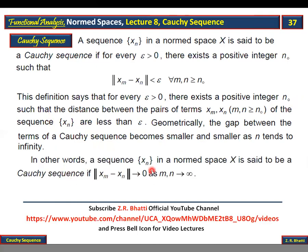In other words, a sequence {xn} in a normed space X is said to be Cauchy sequence if ||xm - xn|| approaches zero as m,n approach infinity. So the Cauchy sequence definition has two forms: for every epsilon greater than zero, there exists a natural number satisfying the condition, and the short form is that ||xm - xn|| should approach zero when m,n approach infinity.